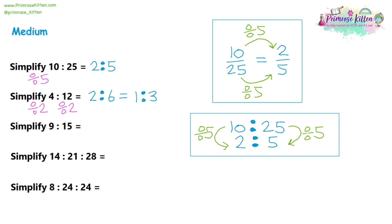Question three: a 9 to 15 ratio. They're not even, so try dividing by three. Nine divided by three is three, 15 divided by three is five — a 3 to 5 ratio. Both three and five are prime numbers, so we can't divide further. Question four: a 14 to 21 to 28 ratio — all in the seven times table. 14 ÷ 7 = 2, 21 ÷ 7 = 3, 28 ÷ 7 = 4, giving a 2 to 3 to 4 ratio.